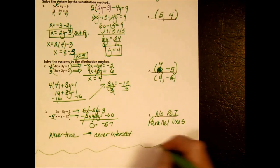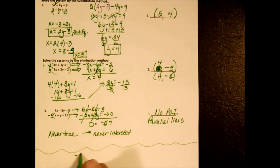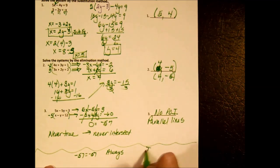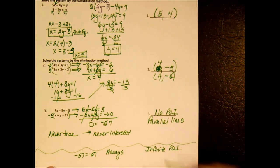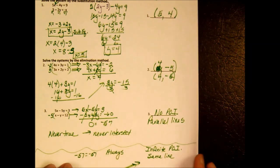Now, if you had instead gotten negative 57 equals negative 57, you would say that's always true, which means the lines always intersect — there are infinite points of intersection because they are the same line, on top of each other, intersecting at every point. Either one of those things can happen, and you should be aware of that.